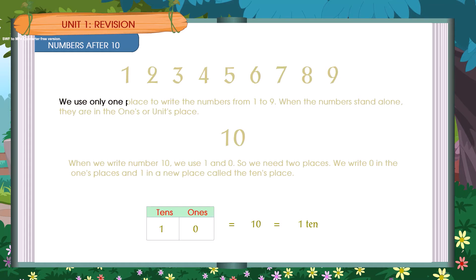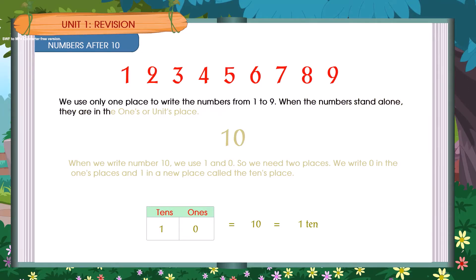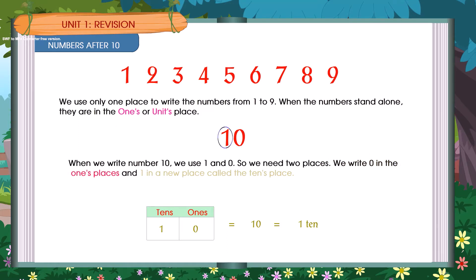Numbers after 10. We use only one place to write the numbers from 1 to 9. When the numbers stand alone, they are in the 1's place. When we write the number 10, we use 1 and 0, so we need two places. We write 0 in the 1's place and 1 in the new place called the 10's place.